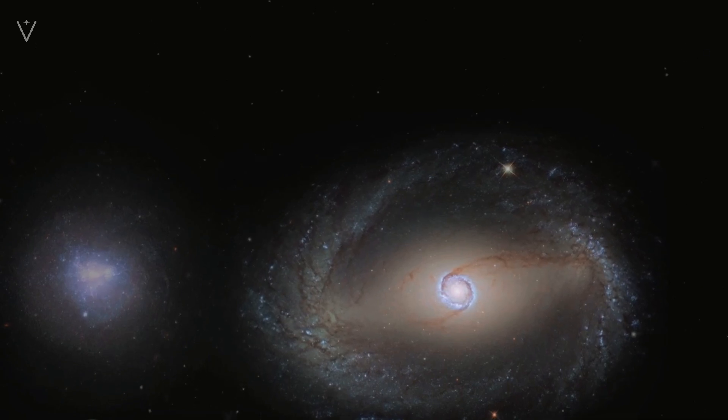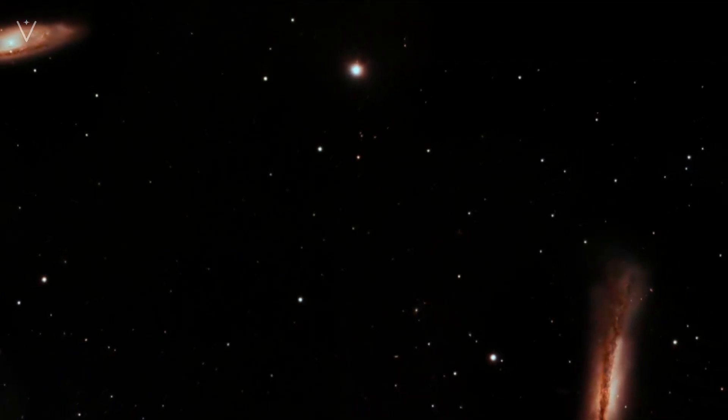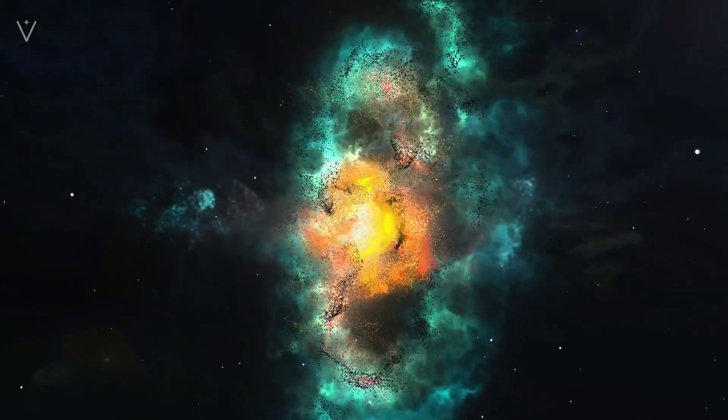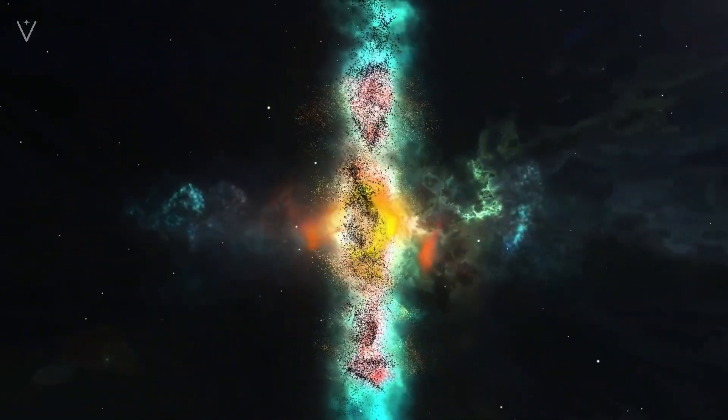Think of a spinning merry-go-round. If people are sitting on the outer edge and spinning too fast, they'll fly off. That's what would happen to galaxies without dark matter.